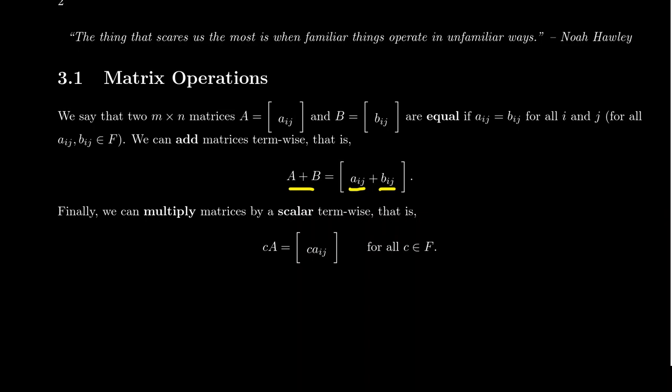We can define scalar multiplication similarly term by term. If we have some scalar C inside our field of scalars and then the matrix C times A will be defined by its generic entry. C times A_ij will be the I-J position of the scalar product C times A.